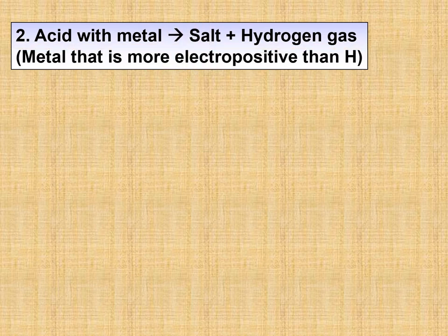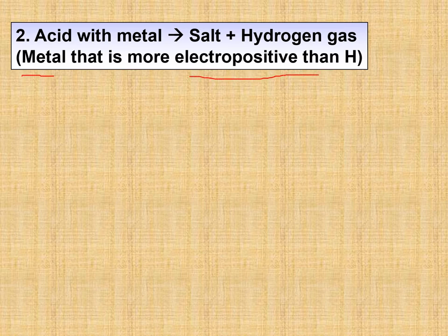The second property: acid reacts with metal to give salt and hydrogen gas. There is a condition — the metals must be more electropositive than hydrogen, meaning they appear above hydrogen in the electrochemical series. For example: magnesium, zinc, aluminium. But not sodium, lithium, or potassium — those are too reactive.